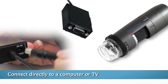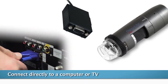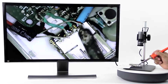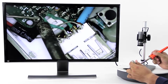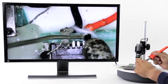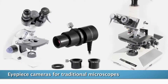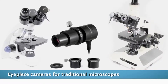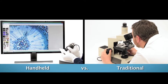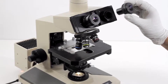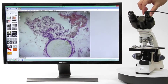VGA, DVI, HD interface, and RCA composite connections are connected directly to a TV or monitor and do not require a computer. For users with existing traditional microscopes, the DynaLite eyepiece cameras provide a quick and easy solution to making your microscope digital.